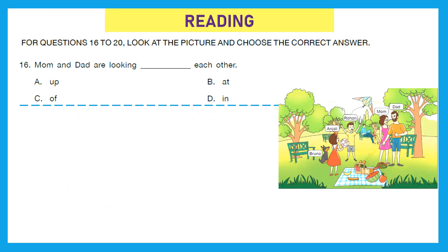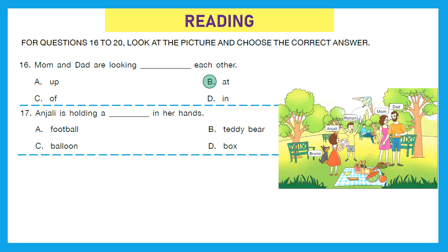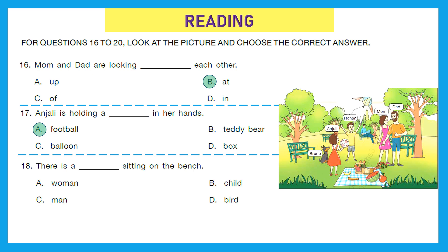Moving to our second section, that is reading. For questions 16 to 20, look at the picture and choose the correct answer. Question 16: 'Mom and dad are looking dash each other.' The preposition 'at' indicates direction, so they are looking at each other. Option B. Question 17: 'Anjali is holding a dash in her hands' — Anjali is holding a football. Option A. Question 18: 'There is a dash sitting on the bench' — there is a man sitting on the bench. Option C.